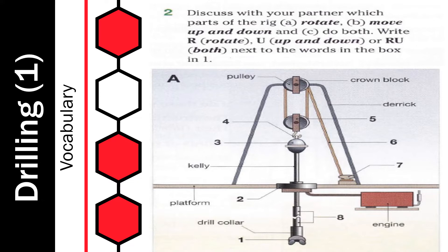Now, dear students, let's move to exercise number 2. Here we have to discuss which parts of the rig: A — rotate; B — move up and down; and C — do both. Write R if it rotates, U if it moves up and down, or R and U if it rotates and moves up and down. Please think well before you decide, then pause the video and come back to check your answers.